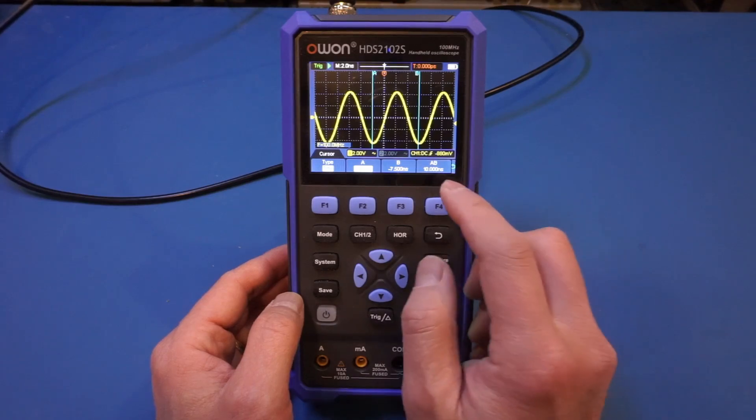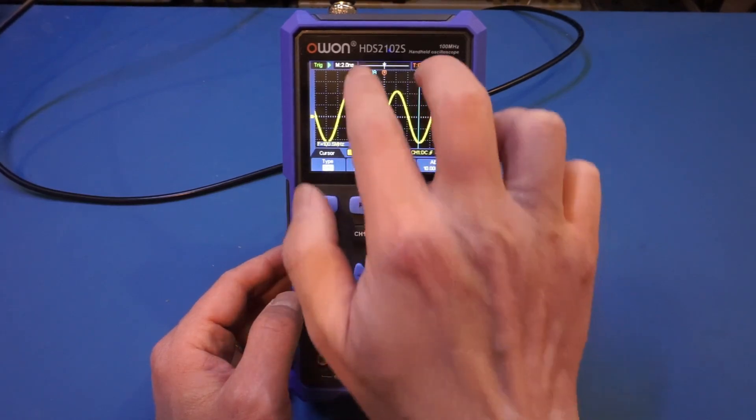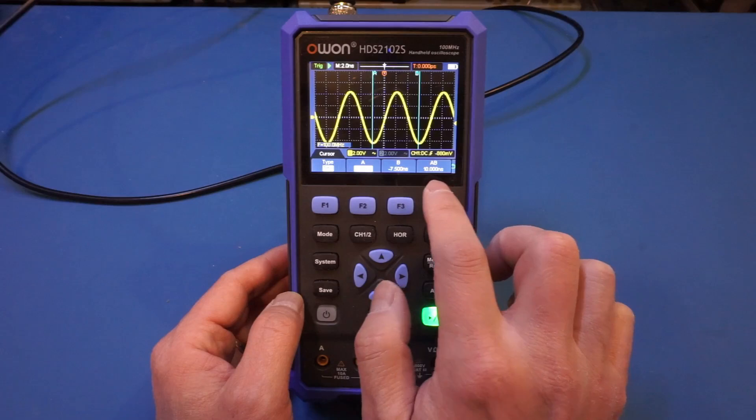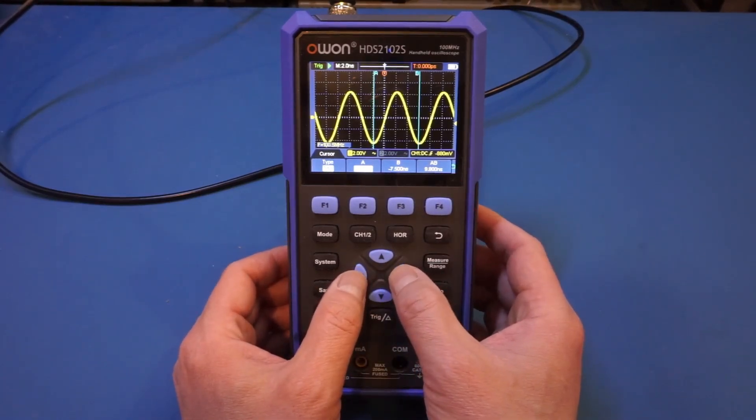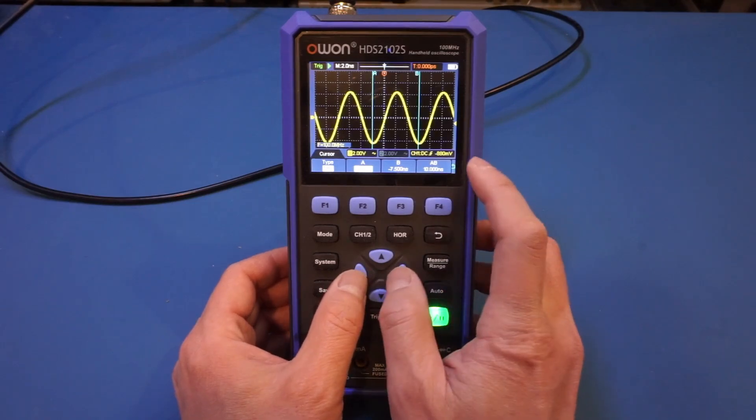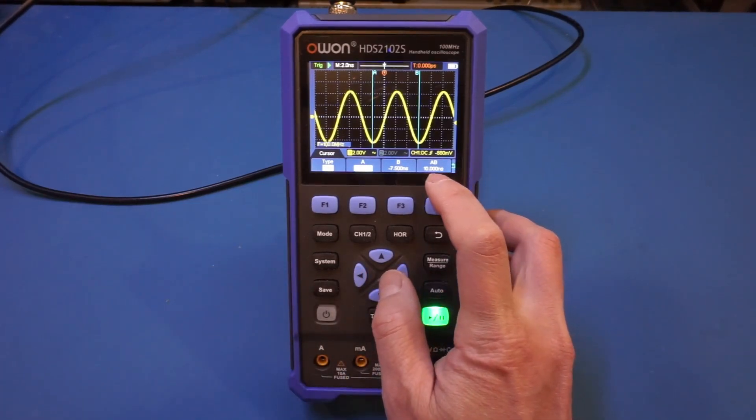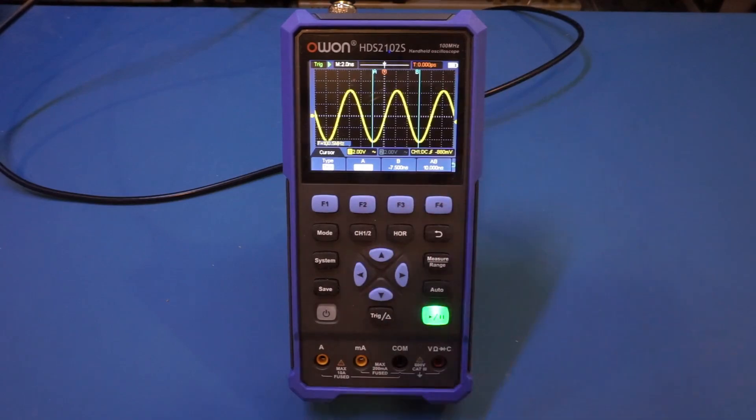So you can see that now between these two cursor lines we're reading 10 ns. If I change the location of cursor A, you will see this number changes. So clearly from this reading, we know that the signal is a 100 MHz signal as well.